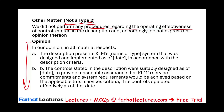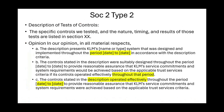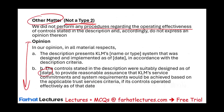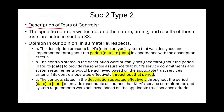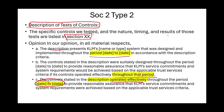Then we have the opinion. The opinion is as of a particular date, about the description and the suitability of the controls applicable to the trust services criteria, since this is a SOC 2. In a SOC 2 Type 2, rather than saying 'other matter,' we say 'description of tests of controls' — we specify what we did. The specific controls tested and the nature, timing, and results of those tests are listed in a separate section. In our opinion, in all material respects, we tested the description for a period of time, the suitability of the controls throughout the period, and the controls stated in the description operated effectively. We also tested the operating effectiveness for all three for a period of time.